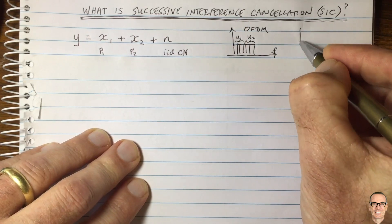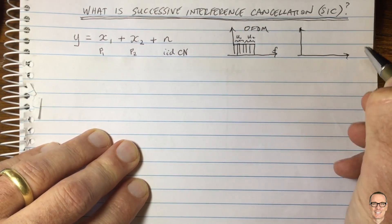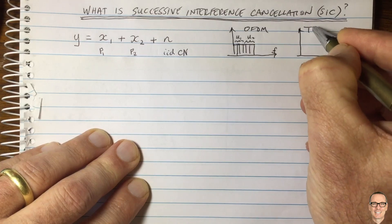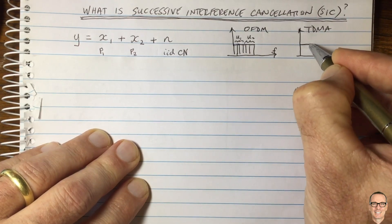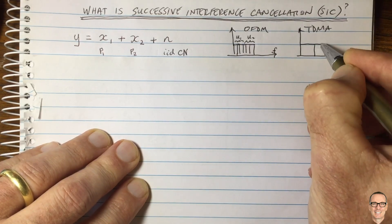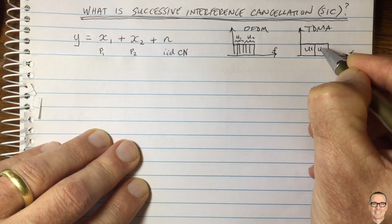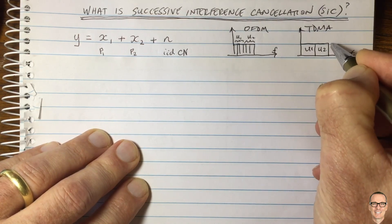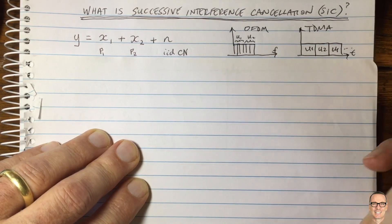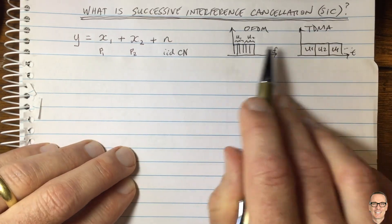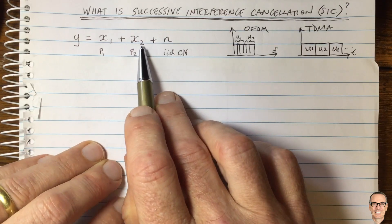Another orthogonal way would be in time with TDMA. These are two very familiar ways for dividing up resources: you divide time so that user 1 has a time slot, then user 2 has a time slot, and you repeat. Both OFDM and TDMA are orthogonal ways of dividing up the resources.